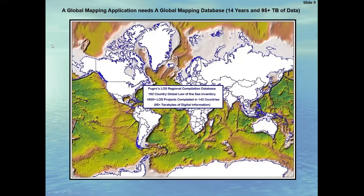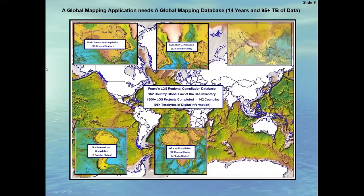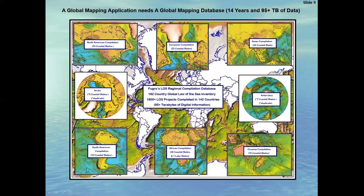Just to roll backwards a little bit so that you understand what's going to be discussed today: 14 years ago, we started to assemble a global database. There's over 95 terabytes worth of data. We subdivided the planet to cover the entire world into eight regions, two for the polar stereographic. We've completed 1,800 projects in 142 countries. But today's focus will be using data only from the African compilation relative to where the desktop study will be covering these waters.